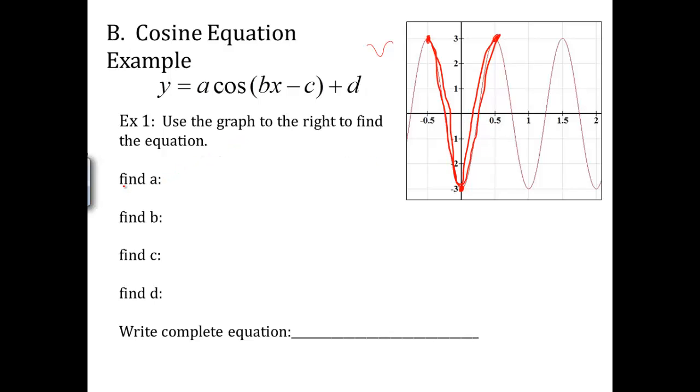To find a, remember, a is one half, the maximum minus the minimum y value. So one half. What's the maximum y value? That's a three. Minus negative three. So minus negative makes it plus three. So one half of six, which is three. So a is three.